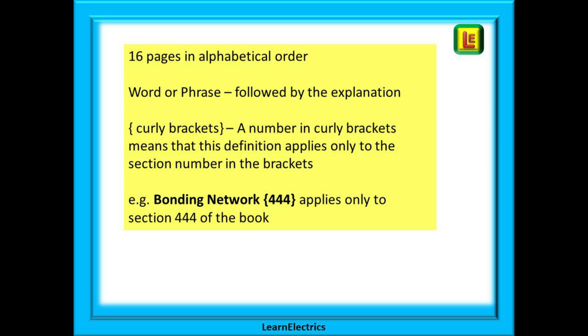Some entries are followed by a number in curly brackets. This means that the explanation of this word or phrase is specific to the wiring regulations as a similar word may be used in another industry with a totally different meaning. If you look at bonding network for example at the bottom of page 24 you will see an example of this. It means that this definition only applies to section 444 in the wiring regulations.